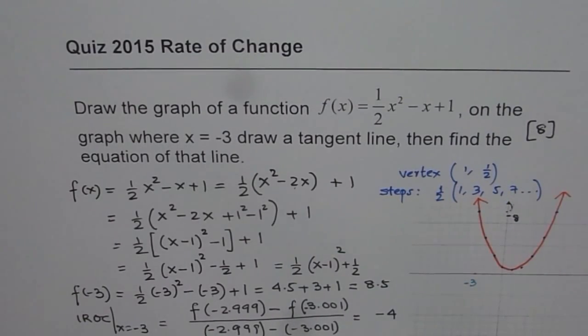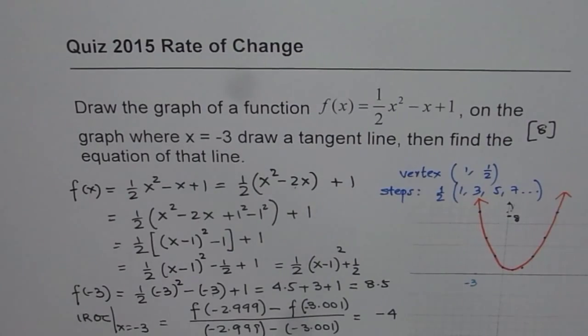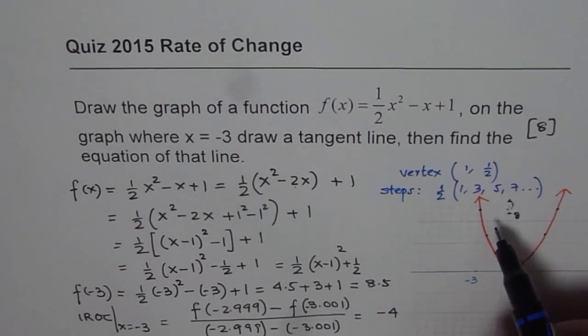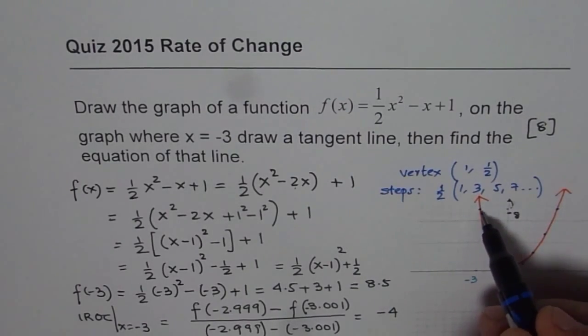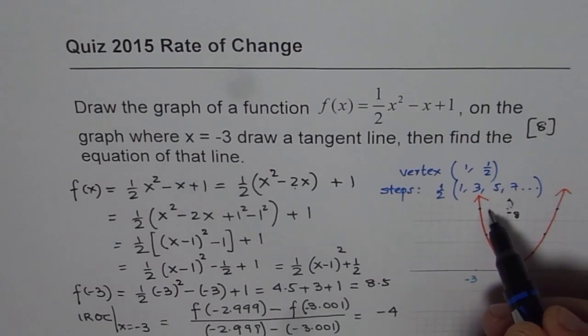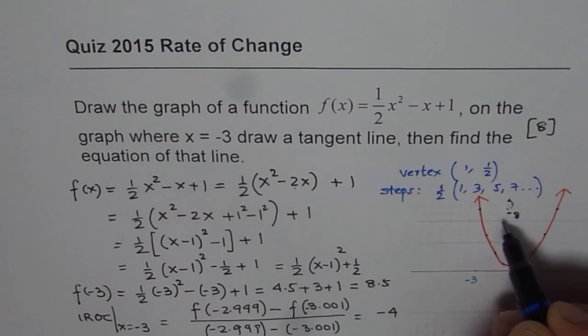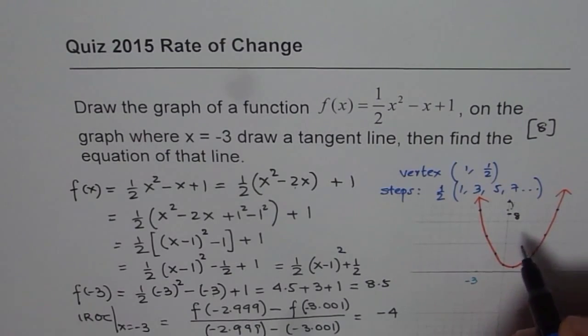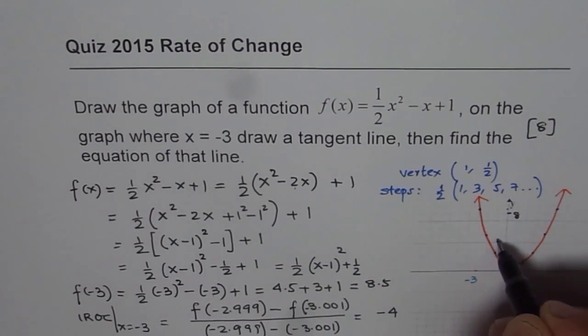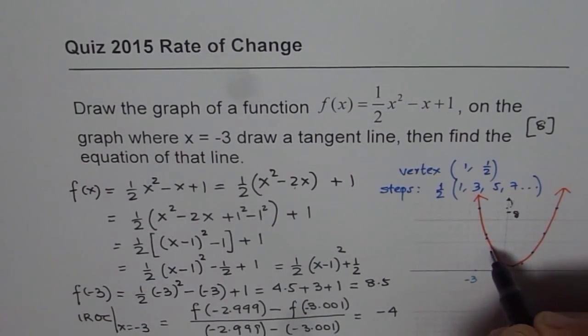So now let us try to draw the tangent for this function. So we say slope is minus 4, it means what? It really means we are at 8.5. So with every unit to the right, we'll move 4 units down, correct? So from, let us say, we'll use 1 unit, so 8.5 minus 4 is 4.5, so 1, 2, 3, 4.5 will bring us to the next unit, do you see that?